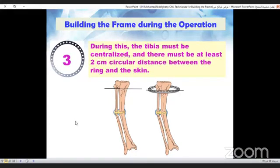Step three, you must centralize the tibia during this and leave at least two centimeters central circular distance between the ring and the skin.